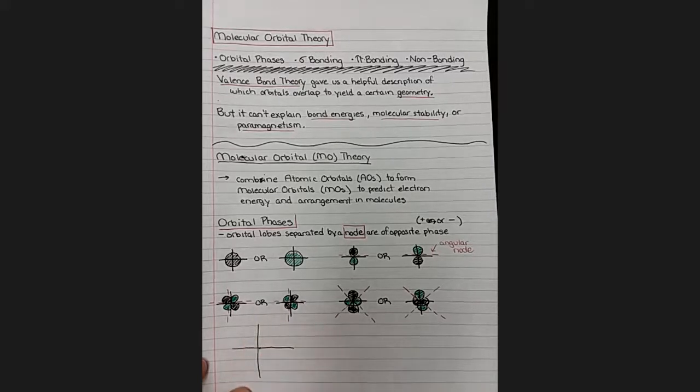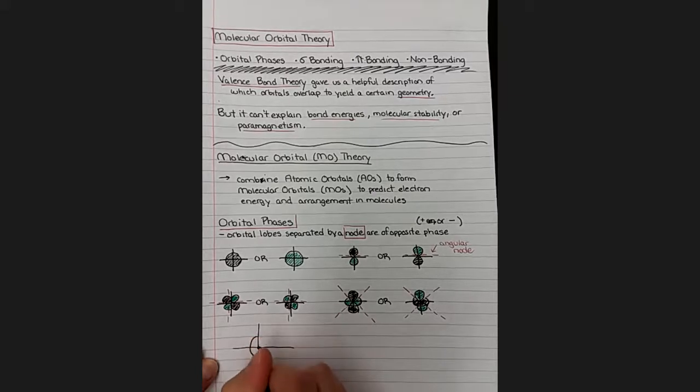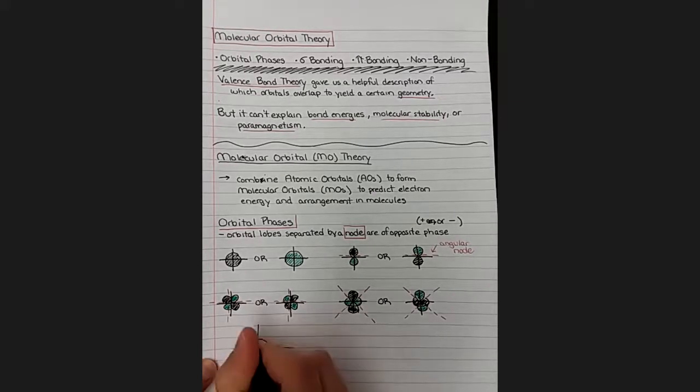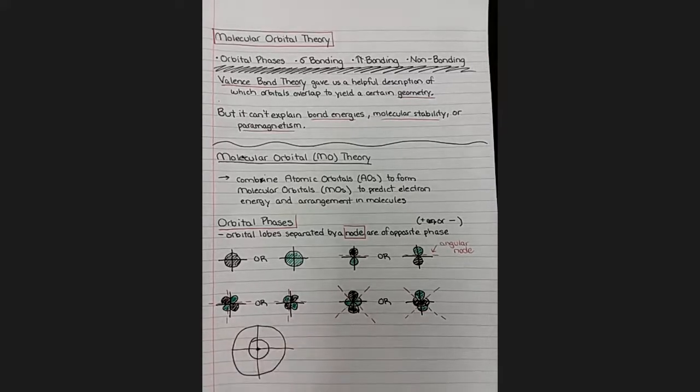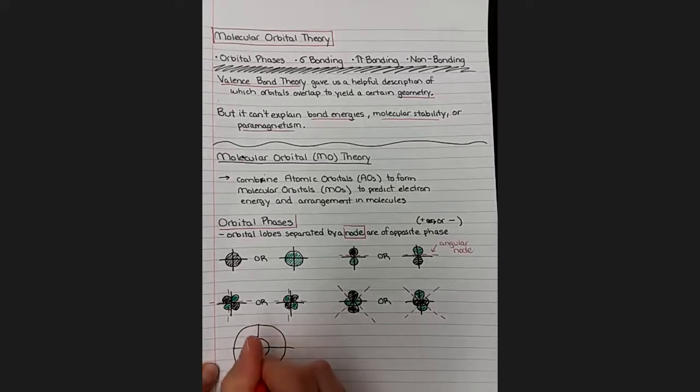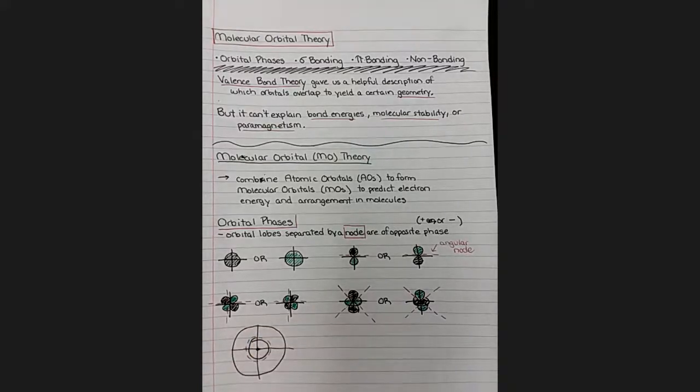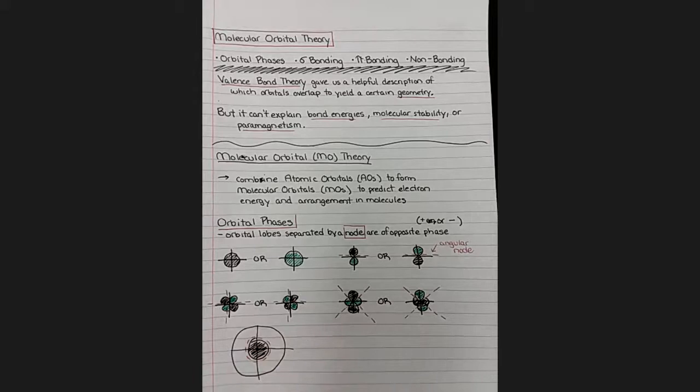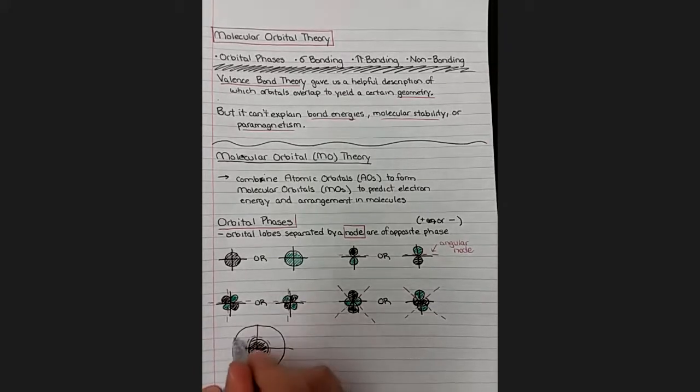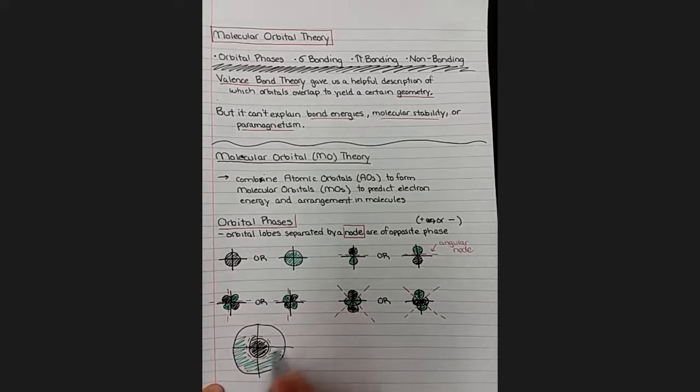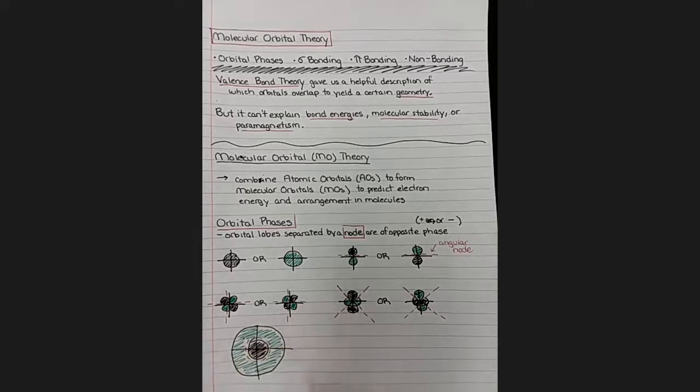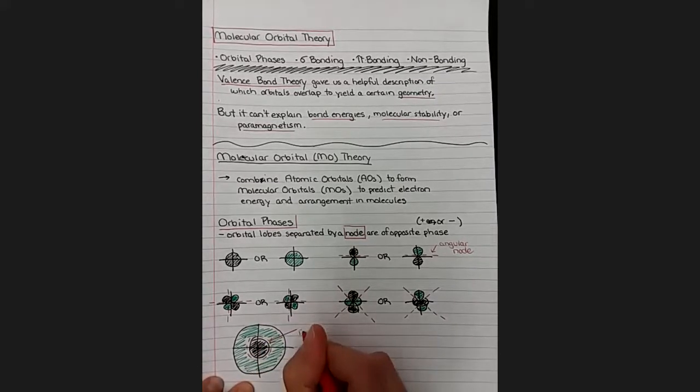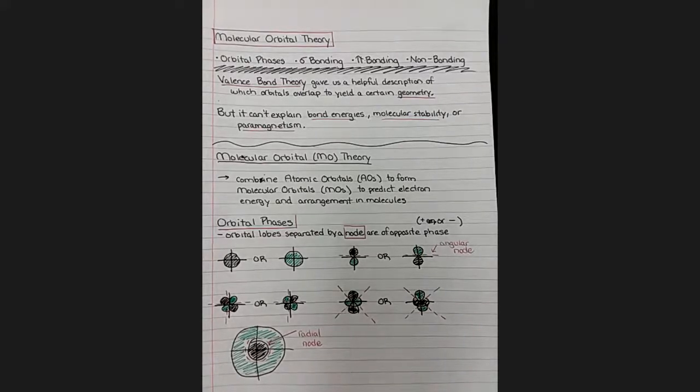And then just for the sake of completeness, not because we actually need to talk about it, let's draw a radial node. So if we have an s orbital like that, but we have greater than a 1s orbital, in between the lobes of an s orbital lies a radial node, like the area between an orange and an orange peel. And so when you move from one lobe over a radial node to the next one, we have to change colors as well. So we also change phases when we cross over a radial node. We just won't be worrying about those too much right at this time.